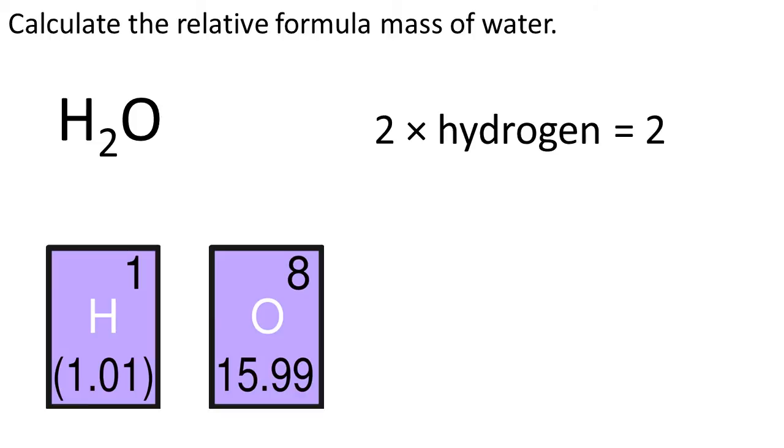Two hydrogens, two 1s, that's 2. And our oxygen weighs 16. Again, we've got a three-atom molecule. Add those two hydrogens to that one oxygen, and we get a relative formula mass of 18. It's that simple.